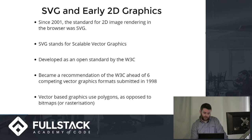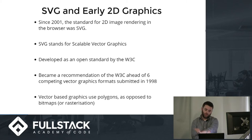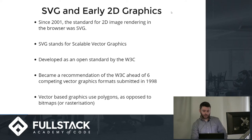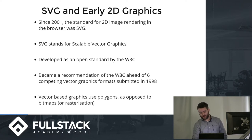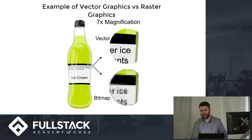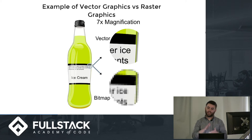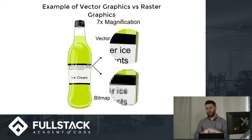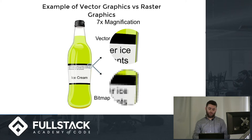SVG is a vector-based graphics format, which means it uses calculations of points in a graph to render polygons that represent the image. This is opposed to rasterization, which uses bitmaps. In vector graphics, when an image is scaled up it maintains its clarity because everything is done by calculation. However, when you scale a bitmap up it loses clarity because the pixels are just being enlarged.